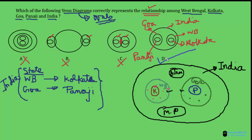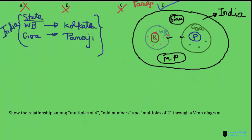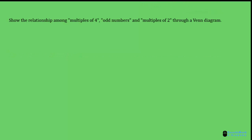I hope you have understood how to work with Venn diagrams. Let me give you one more example to make this concept clear. The question says: show the relationship among multiples of 4, odd numbers, and multiples of 2. Multiples of 2 are: 2, 4, 6, 8, 10, 12, 14, and so on.